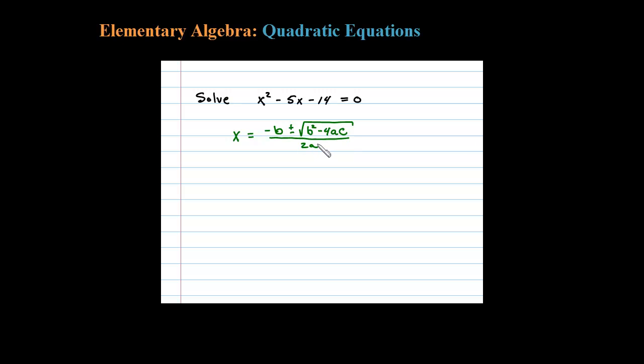So there's the formula and let's go ahead and plug into it. In this case, A is 1, B is negative 5, and C is negative 14.